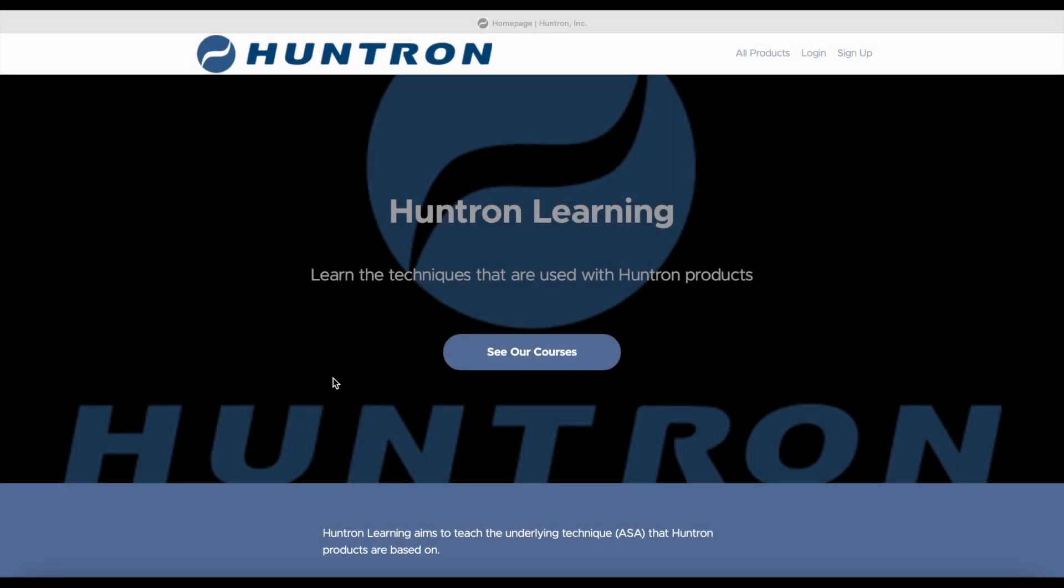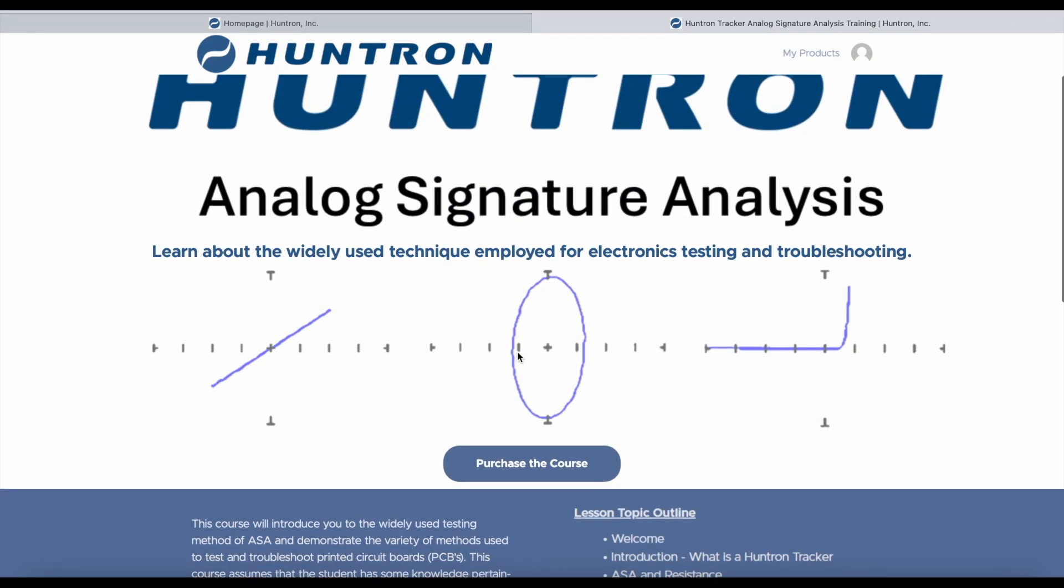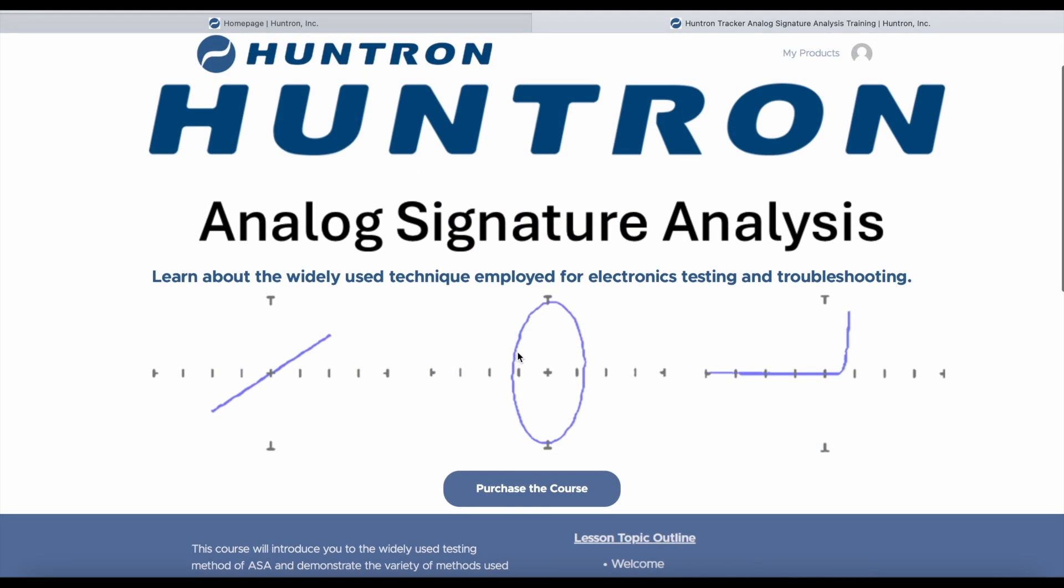The Huntron Tracker Training Series is an online resource crafted so anybody can learn Analog Signature Analysis, referred to as ASA, for troubleshooting printed circuit boards. This course explores ASA in depth and how it is used as a power-off electronic testing and troubleshooting method.